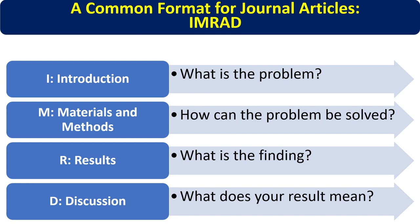Once you have decided which type of research article to publish, we look at the different components of a research paper. The basic common format is called the IMRAD format: I stands for Introduction, M for Materials and Methods, R for Results, A for 'and', and D for Discussion — Introduction, Materials and Methods, Results, and Discussion.